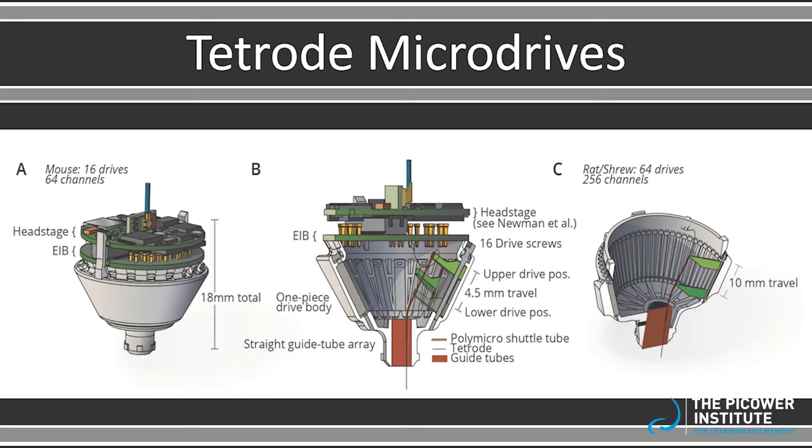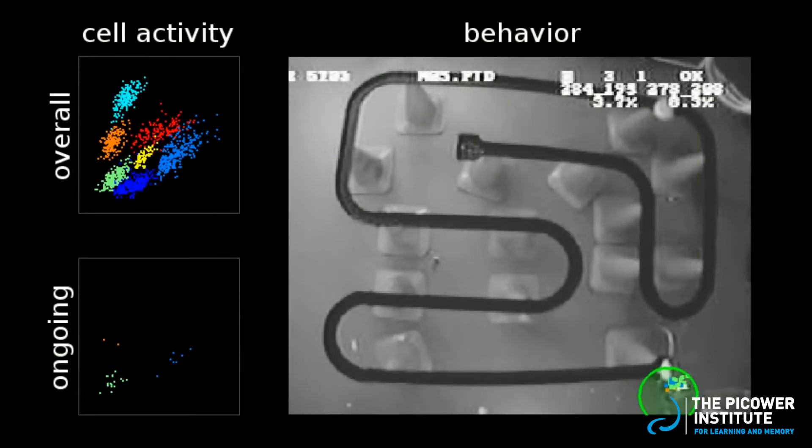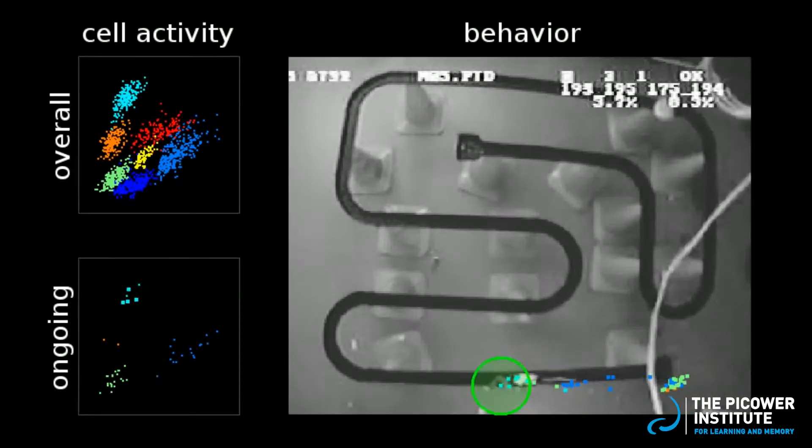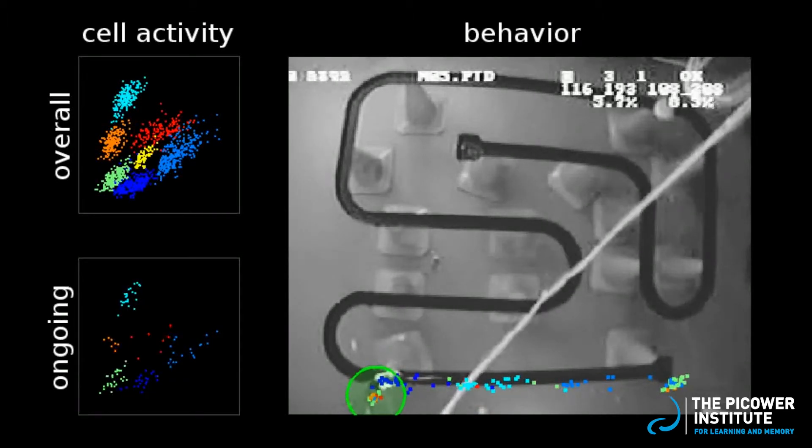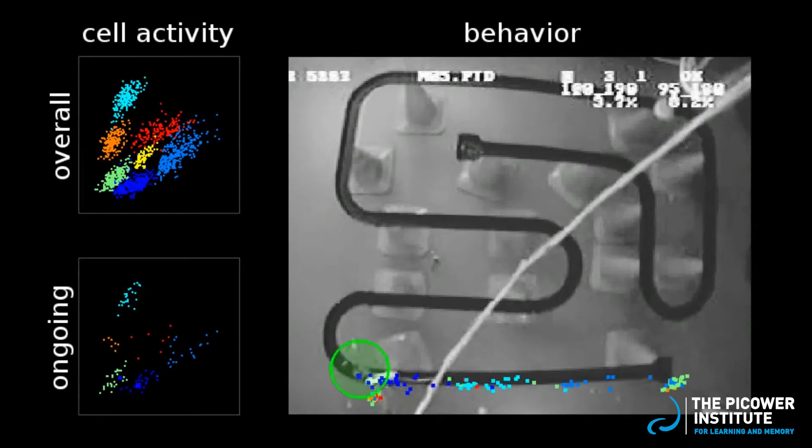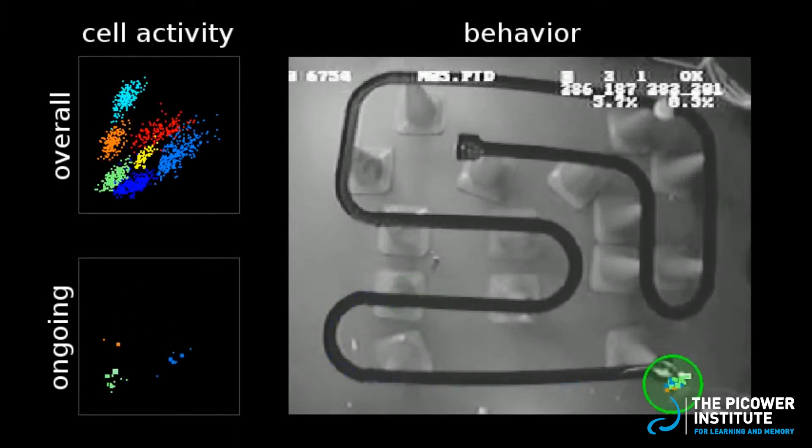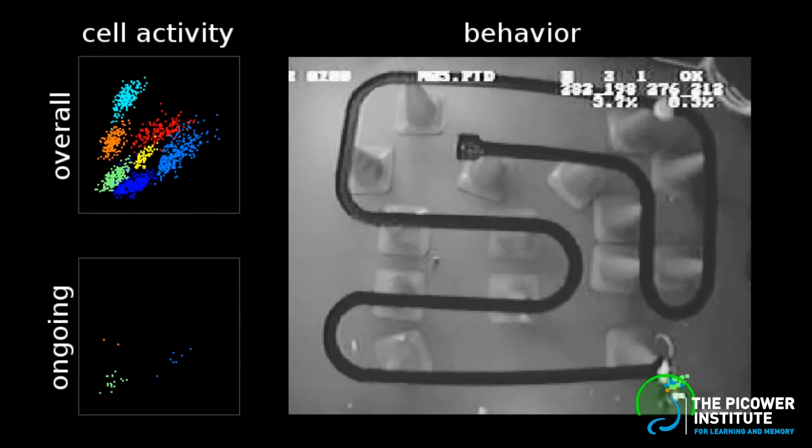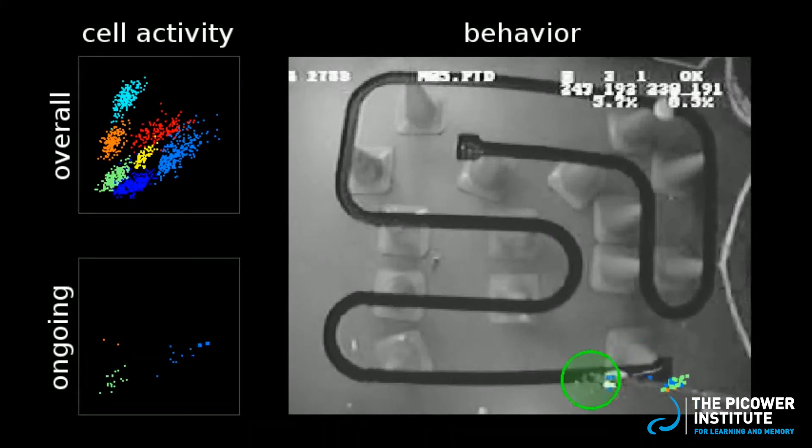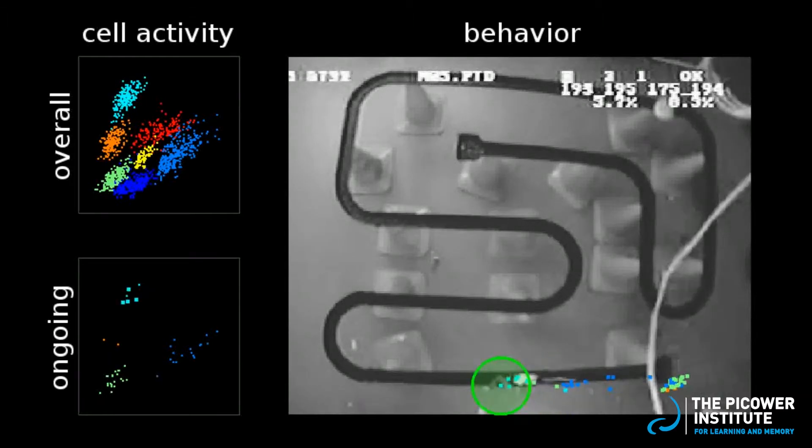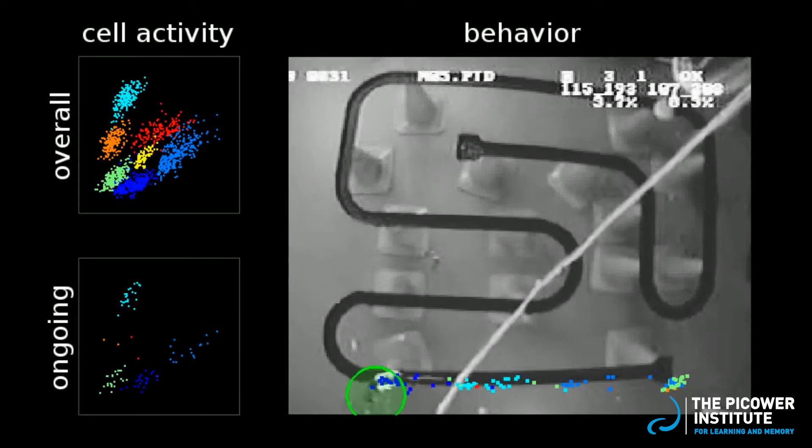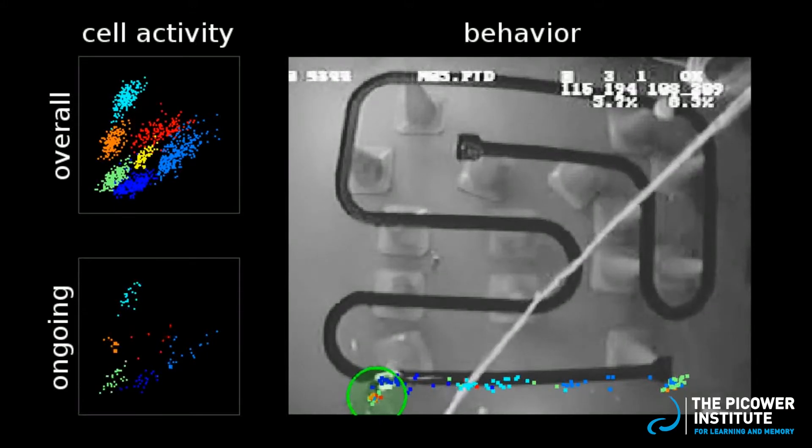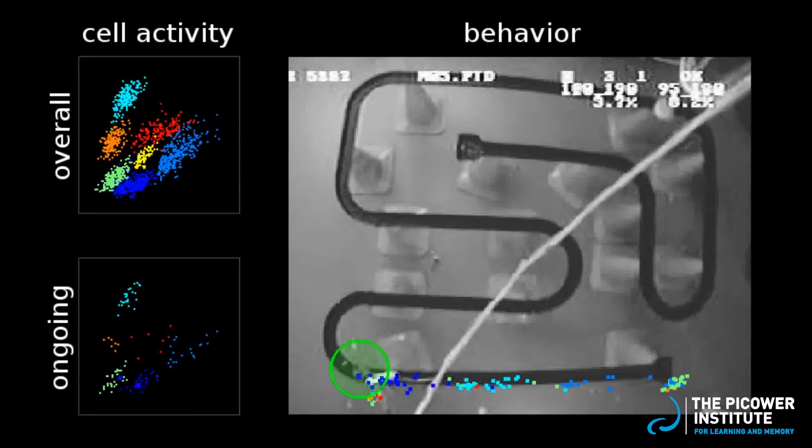In this experiment by former lab members Thomas Davidson and Fabian Kloosterman, hippocampal place cells were recorded as the rat traversed a winding track. In the top left figure, you can see seven color-coded place cells. The individual dots represent each time a place cell fired during one lap on the track. The bottom left figure presents the same information, but in real time as the rat runs along the track. The video shows the rat running on the track. It also shows where he was located as each of the place cells fired. The popping sound is the sound of those place cells firing.